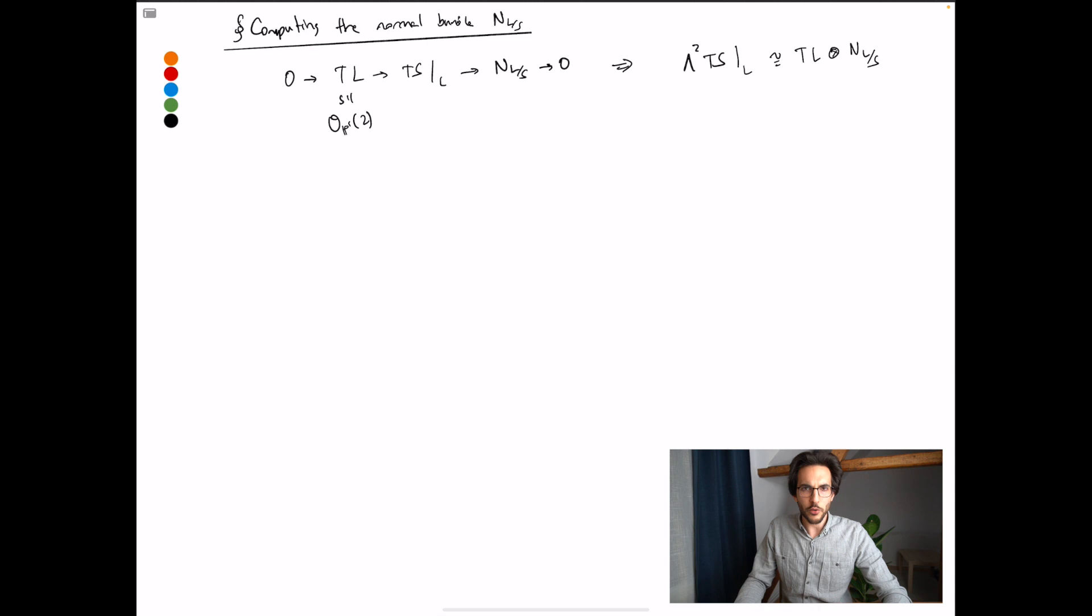So this is a standard result if you know about coherent sheaves. It's a standard exercise in Hartshorne, for example, that the determinant of the middle term is the tensor product of the determinants of the two outer terms, TL and NLS. But the determinant of these line bundles, TL and NLS, are just themselves. They're rank one. Hence the expression on the right. So I know TL. If I find out the second wedge of TS, I'm done. So how do we do this?